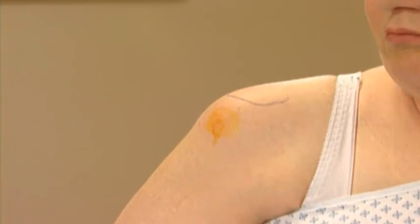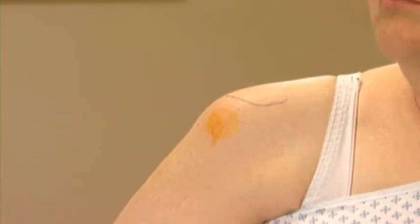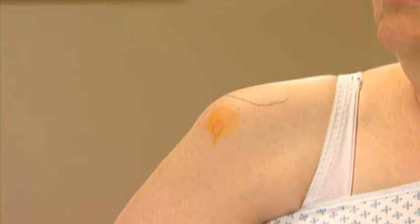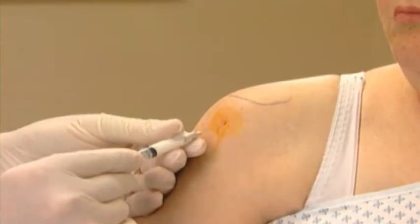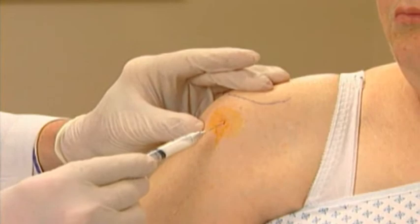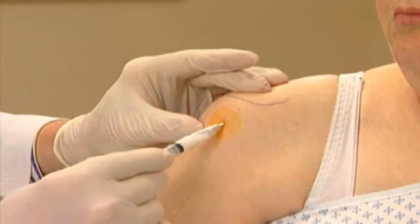A 2-syringe technique is used in order to avoid problems with fat atrophy and depigmentation. These problems occur when the steroid is injected just beneath the skin. The appropriate dose of Depomedrol for the treatment of conditions involving tendinous and bursal structures varies with the condition being treated and ranges from 4 mg to 30 mg. A 25-gauge needle is used for the second injection. Make the needle puncture into the same spot to enter the subacromial space.